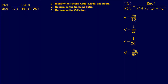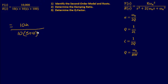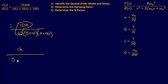Let's jump into our first example. I have a transfer function and I need to: identify the second order model and its roots, determine the damping ratio, and determine the Q factor. First, I need to convert this into the second order model form. Let's simplify: we have 10k over 10, times (s + 10)(s + 100). Simplifying 10k over 10 removes one zero, giving us 1k over (s + 10)(s + 100), which now matches our second order model form.